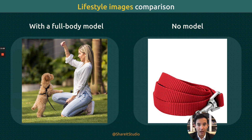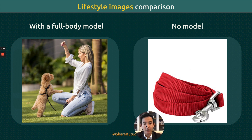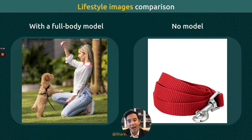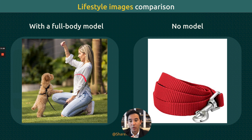For example, let's look at this dog harness. This one has a model and this one doesn't. I'm not saying the one without is bad — it's good. But when you add a model to it, it's just way better. You feel the connection. She's happy, the dog's happy, you see the harness looks good on the dog. Most likely this is going to convert better than the one without a model.